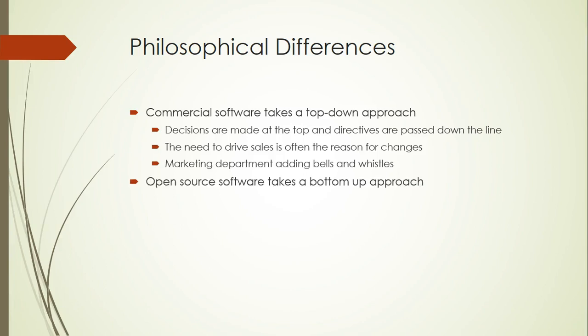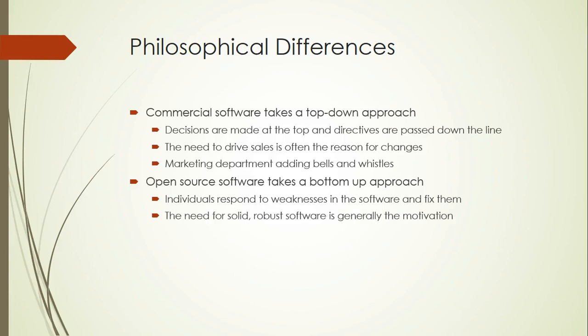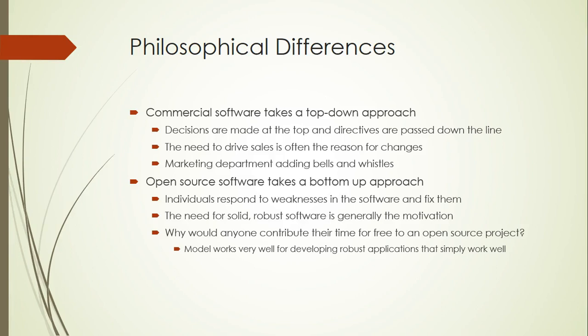Open source software takes a bottom-up approach. It's individuals that respond to perceived weaknesses in the software and fix them without anyone telling them what to do. The motivating factor is generally the need for solid, robust solutions that just simply work well. You might ask: why would anyone contribute their time for free to an open source project? It's been shown that this open source model works very well for developing robust applications, which is appealing to people frustrated with feature-loaded commercial software that does a lot of things but sometimes not implemented that well.